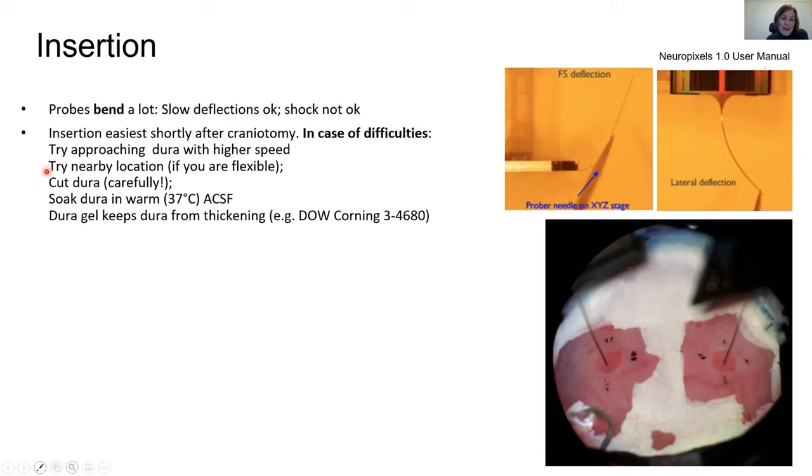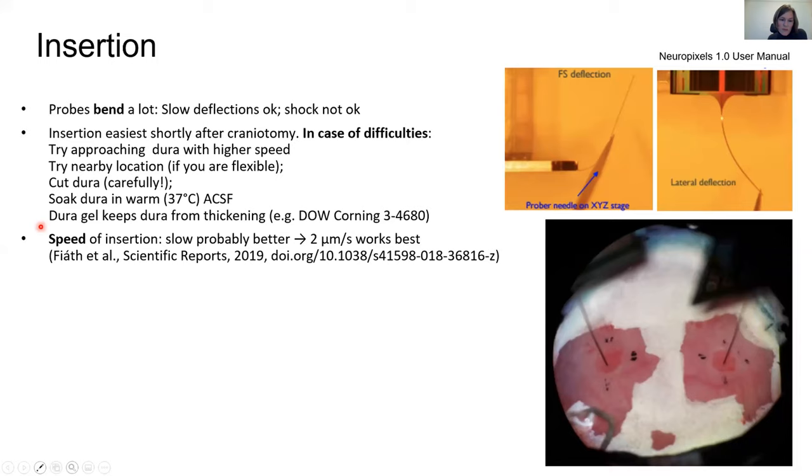The insertions will be easiest shortly after the craniotomy, because the dura is usually nice and soft. If you have difficulties inserting the probe, you can try and approach the dura with a higher speed. You can try another location if you're flexible. You could try and cut the dura very carefully. You could also try and soak the dura in warm ACSF. Or another way of keeping the dura from thickening is using dura gel.